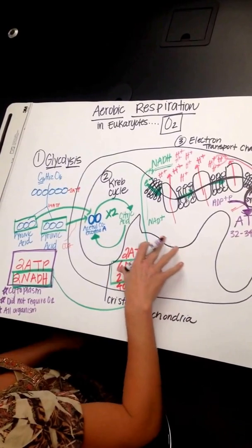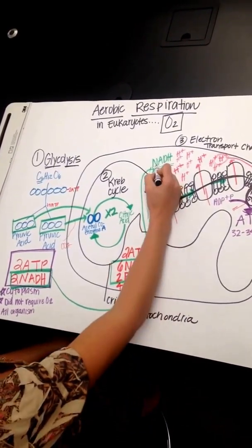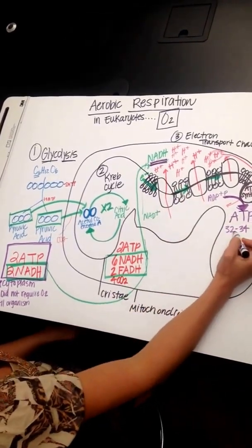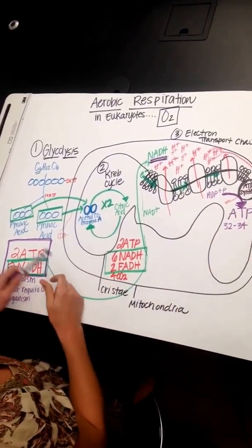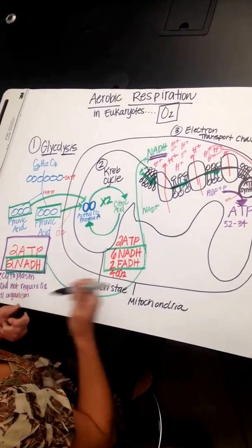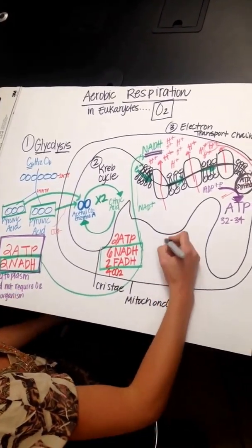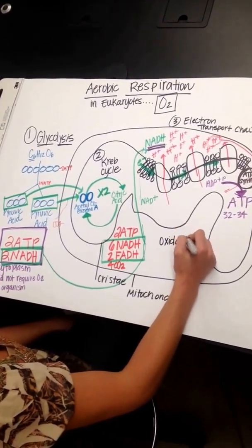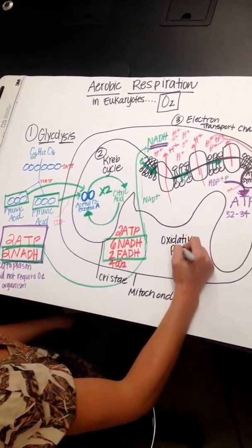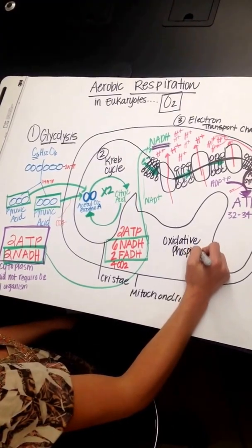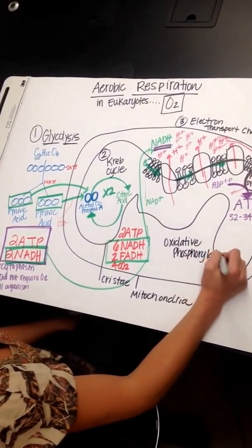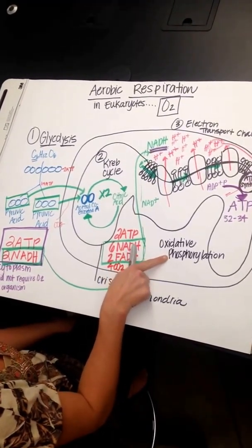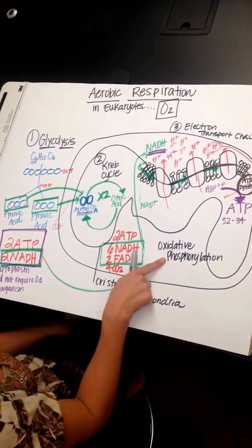So this step, we've taken a molecule and we've oxidized it, lost electrons, and we've made ATP. So another word for that is oxidative. So this ETC is also referred to as oxidative phosphorylation because NADH was oxidized and we made ATP. So we phosphorylated ADP into ATP.